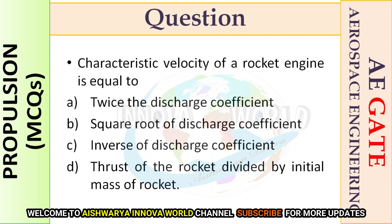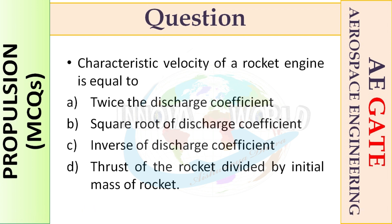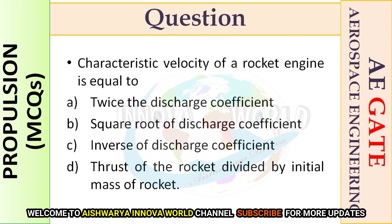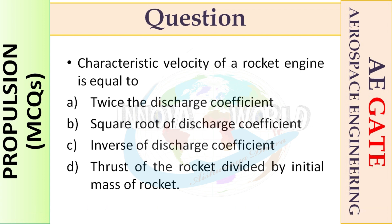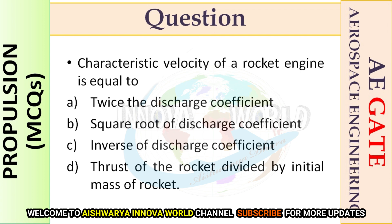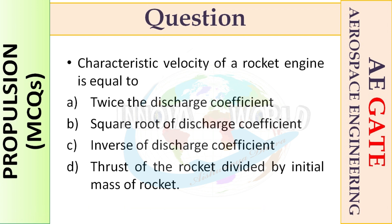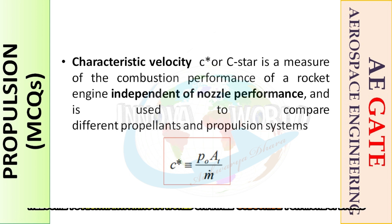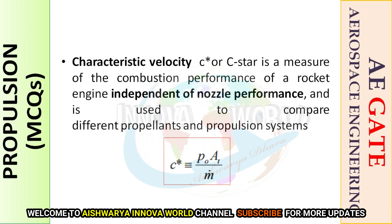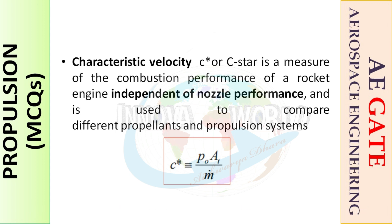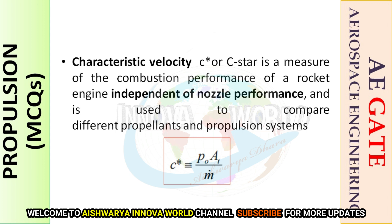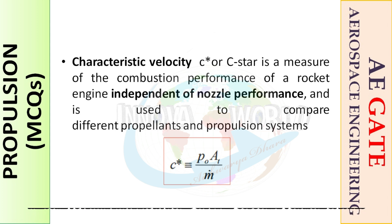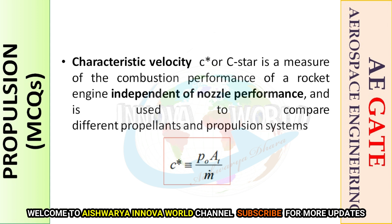Next: the characteristic velocity of a rocket engine is equal to which of the following? Options include: discharge coefficient, square root of discharge coefficient, inverse of discharge coefficient, or thrust of the rocket divided by initial mass. Recalling the definition, C* is a measure of combustion performance of a rocket engine. It is independent of nozzle performance and is used to compare different propellants and propulsive systems.